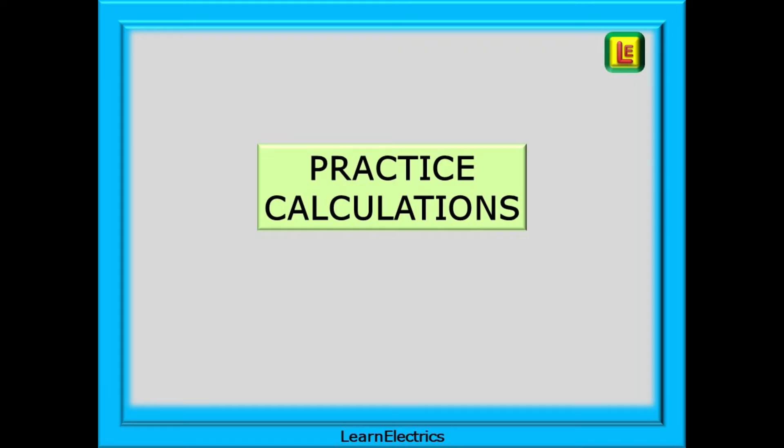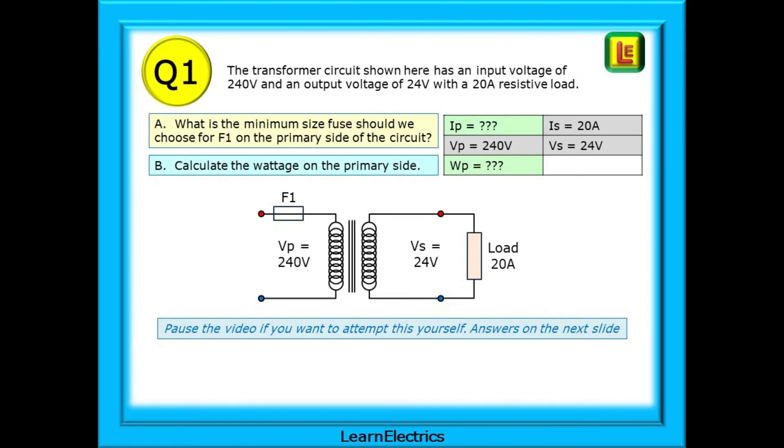There are three questions in total and each question has several parts. This is question number one and there are two parts to it. The transformer circuit as shown has an input voltage of 240 volts and an output voltage of 24 volts with a 20 amp resistive load. First part A, we need to find the minimum size fuse that we should choose for F1 on the primary side of the circuit. And then part B, we must calculate the wattage of the primary side.